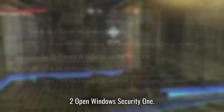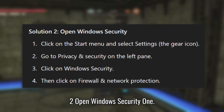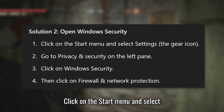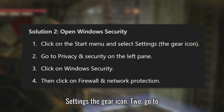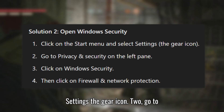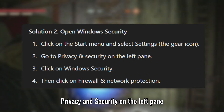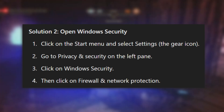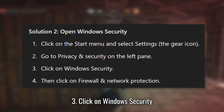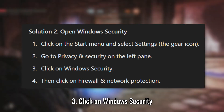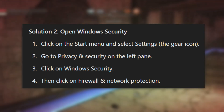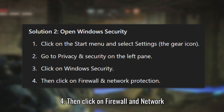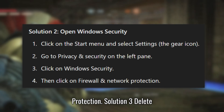Solution 2: Open Windows Security. Click on the Start menu and select Settings (the gear icon). Go to Privacy and Security on the left pane. Click on Windows Security, then click on Firewall and Network Protection.